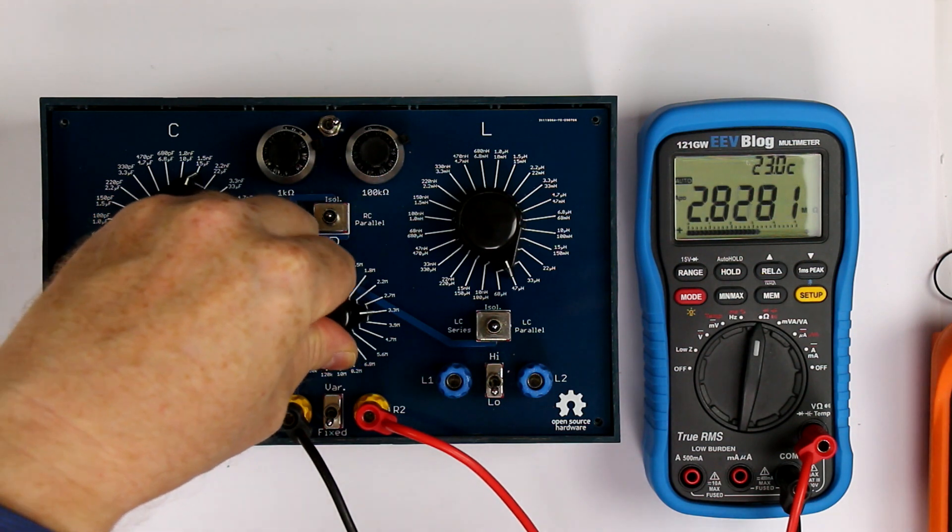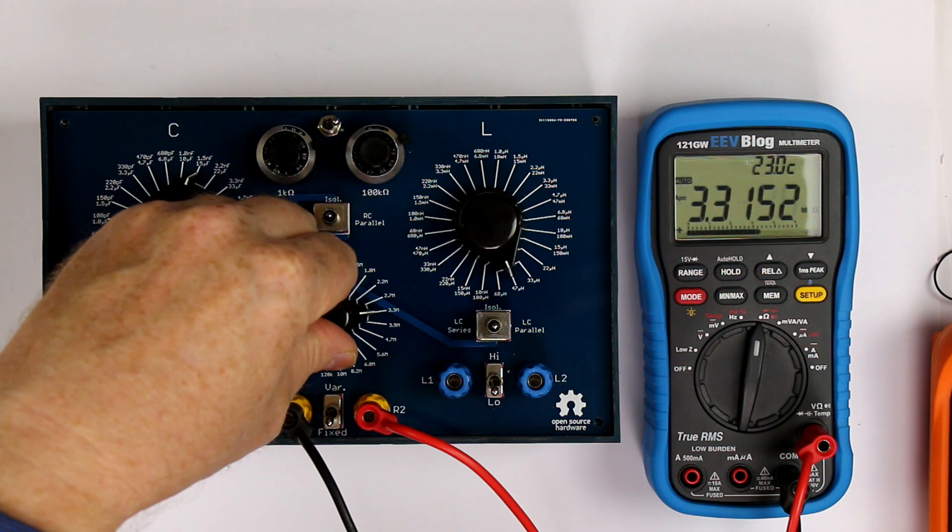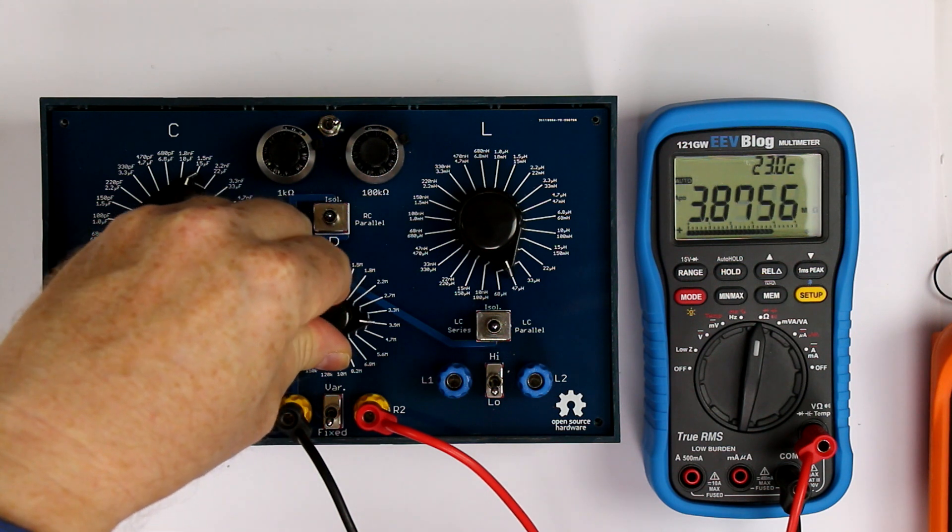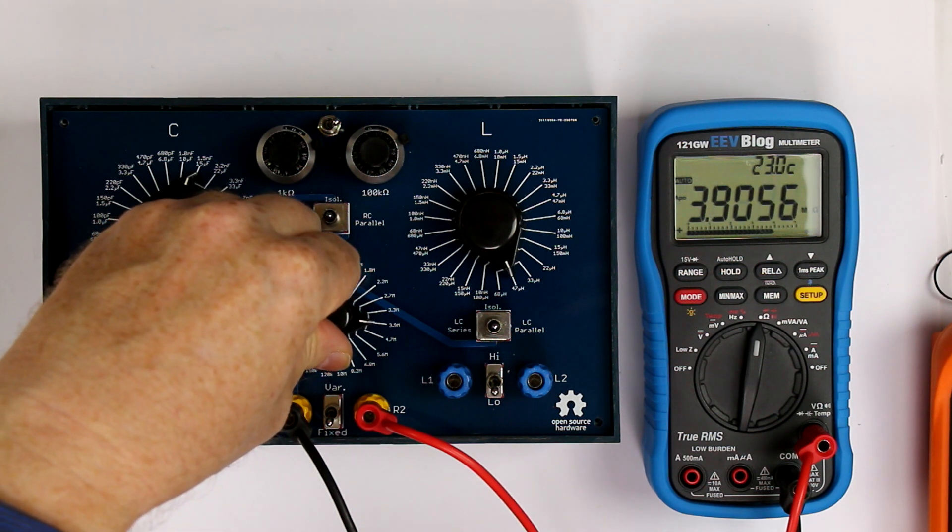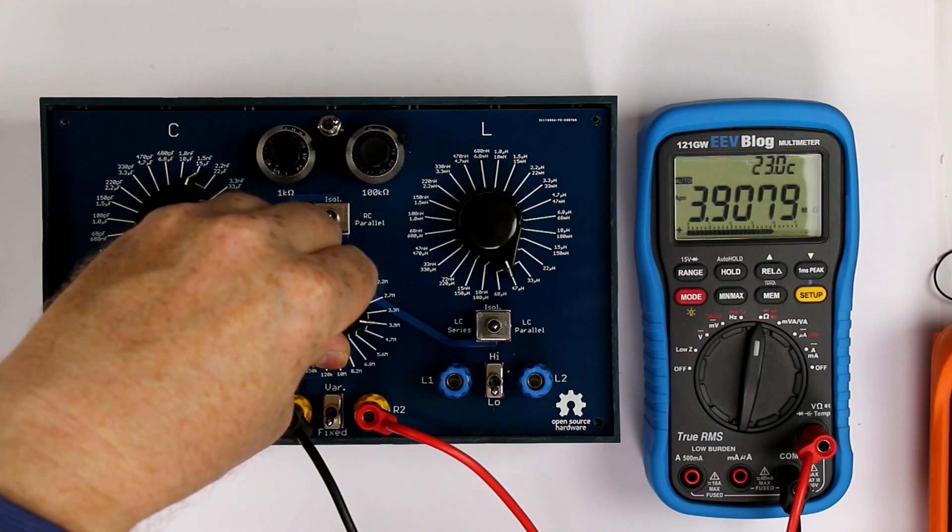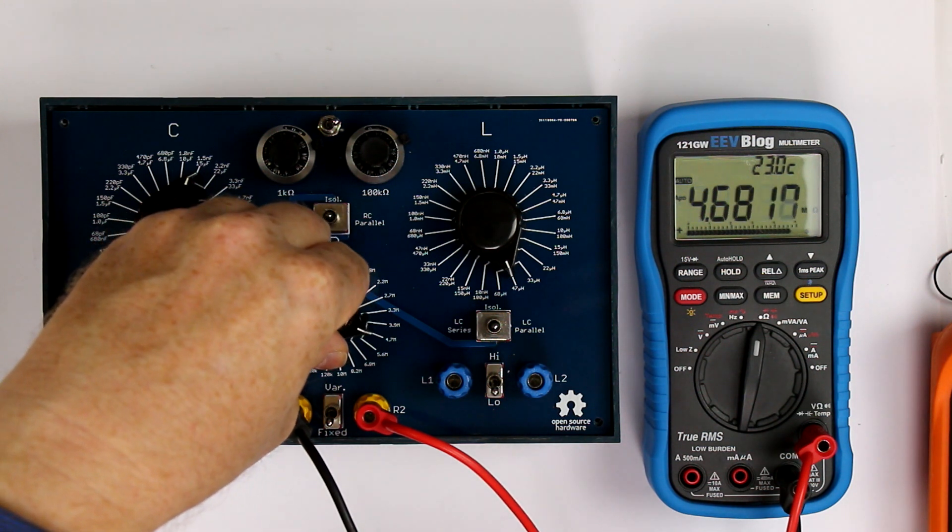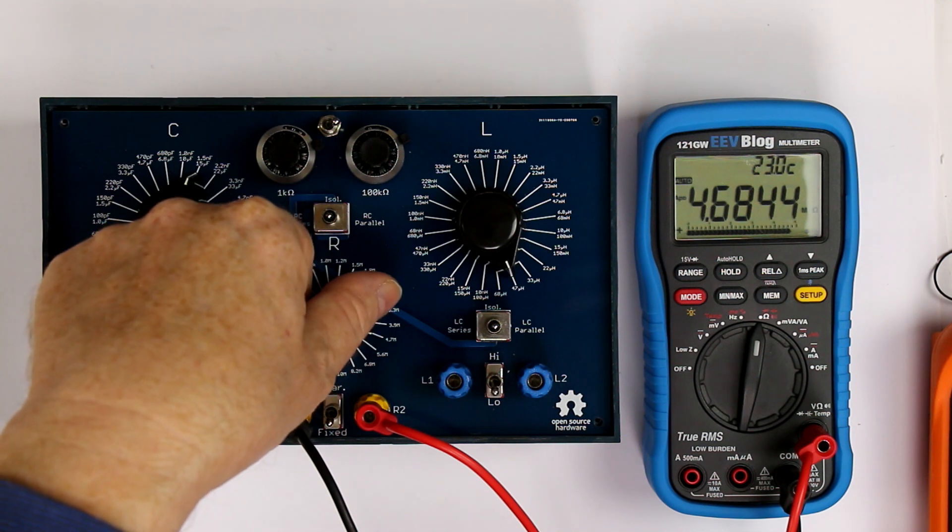So 2.7, okay. 3.3 meg, okay. 3.9 meg, okay. 4.7 is also okay.